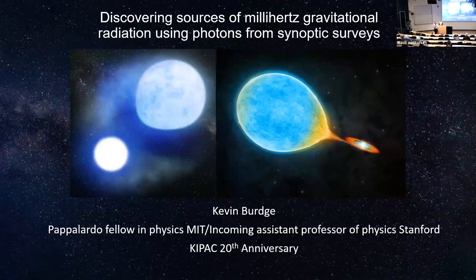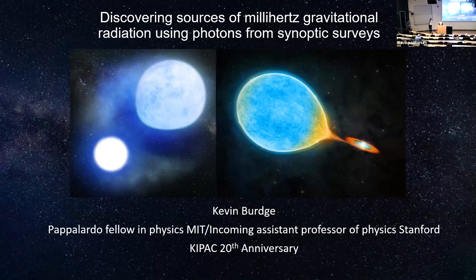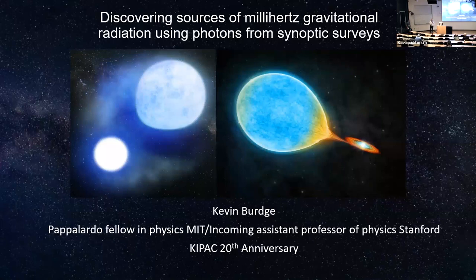Welcome back everyone. We'll resume the extreme and variable universe session, now turning our attention to the variable part. For this next talk, we welcome Kevin Birch, currently a Pappalardo Fellow at MIT, who will be joining Stanford as an assistant professor in physics. His research is about discovering and characterizing astrophysical sources of electromagnetic and gravitational radiation. Today he'll tell us about discovering sources of millihertz gravitational radiation using photons from large synoptic surveys.